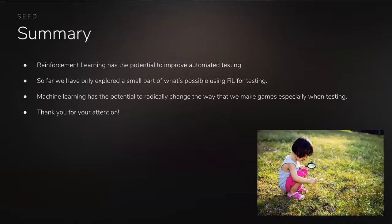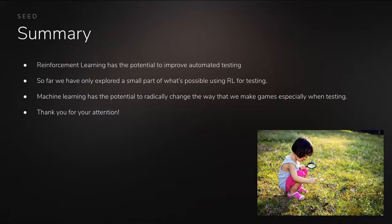To summarize: reinforcement learning has real potential to improve automated game testing. It can push the boundaries of what's possible with scripts and human testers. We've only explored a small part of what's possible with RL and would like to continue. More broadly, machine learning has the potential to radically change how we make games — playing alongside developers simultaneously and learning about the game as it's built. Thank you for your attention; I'll be available for questions.